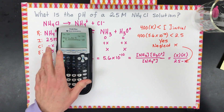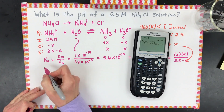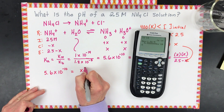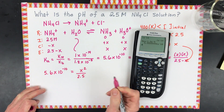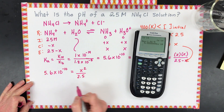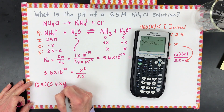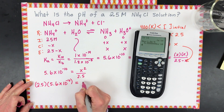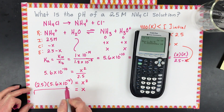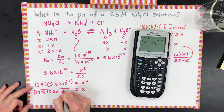So simplifying: 5.6×10⁻¹⁰ equals X squared divided by 2.5. We multiply both sides and then take the square root. That means X equals the square root of 2.5 times 5.6×10⁻¹⁰. I always tell students to show all the work so you can get all the points you can.